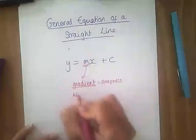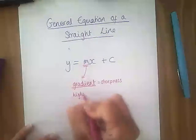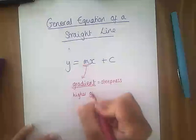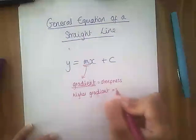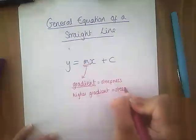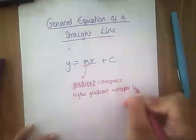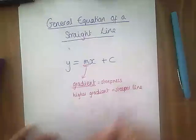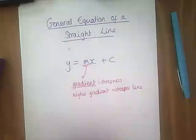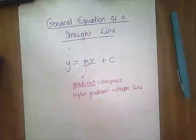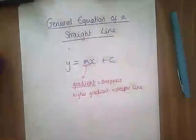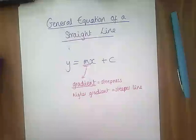Let's write that down: the higher gradient means the steeper the line. That is what m means. It comes from the French word to climb, which is 'monter', to climb. That is the gradient.